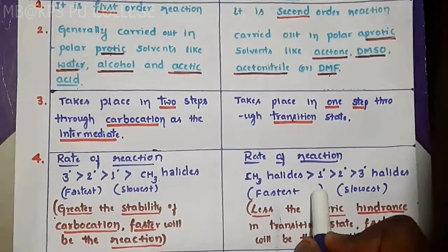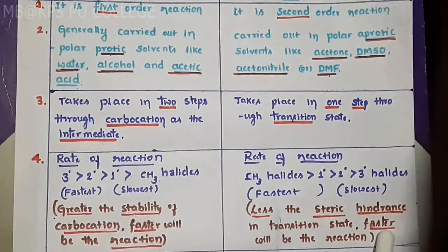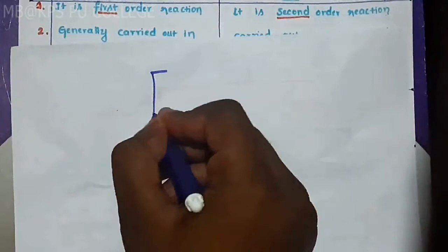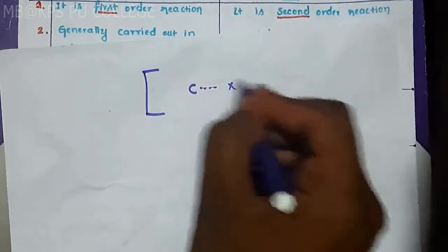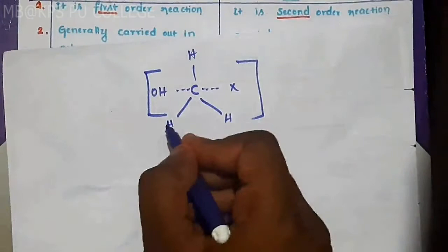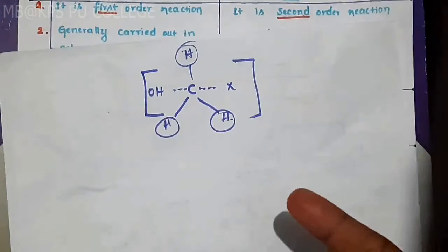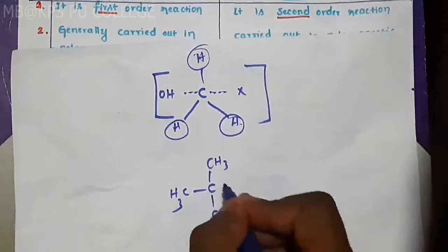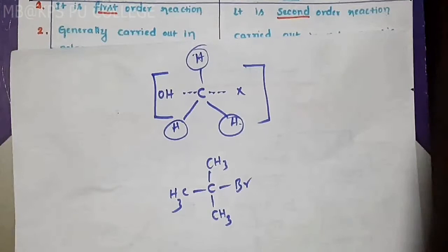Less steric hindrance in the transition state means the reaction proceeds faster. In the SN2 transition state, the carbon holds 5 valence electrons simultaneously. Where fewer bulky groups are present, steric hindrance is less, and the nucleophile can attack more easily. More bulky groups mean more steric hindrance.